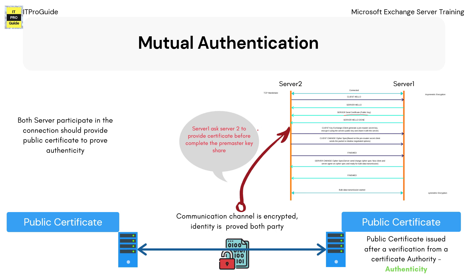When we explained the TLS process diagram earlier, we found only one party exchanging the public certificate. In a mutual authentication TLS communication, both parties have to share their certificate to prove authenticity. In that case we need to add another three steps to the communication. After Server 1 sends its public certificate to Server 2, Server 2 also has to answer with Server 2's public certificate. If both parties demand authentication, both must share their public certificate — and it should be a public certificate, not self-signed, because this proves the authenticity of the parties participating in the communication.